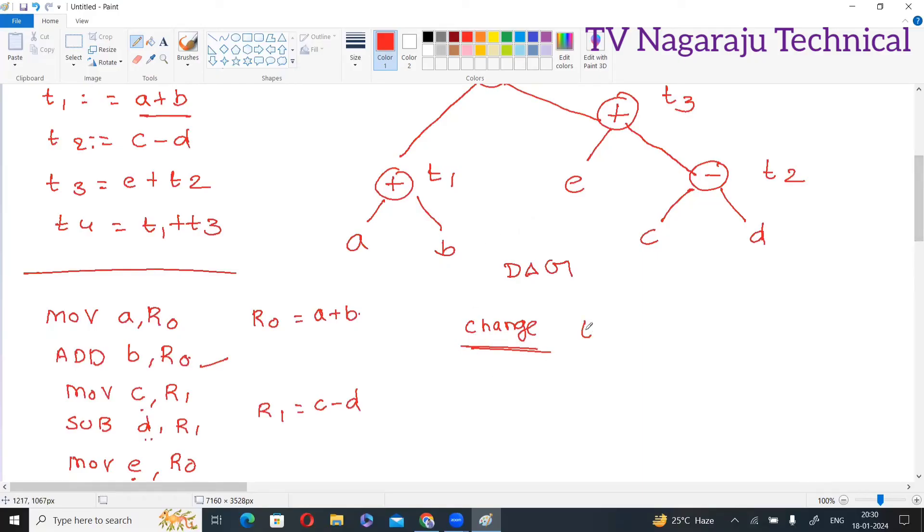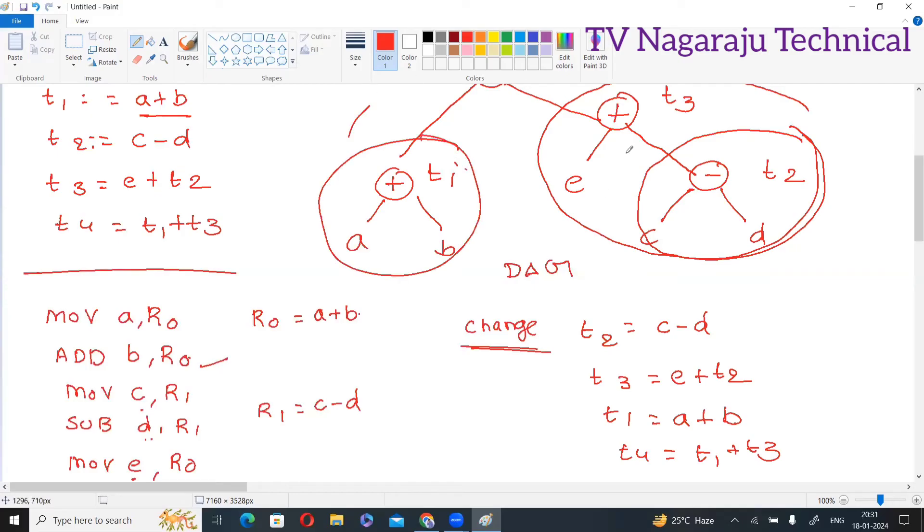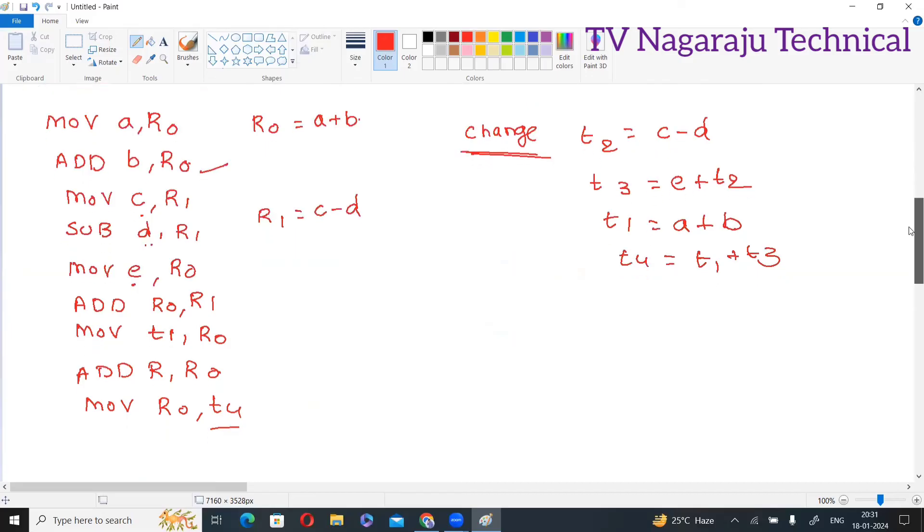Suppose first if I perform t2 equals c minus d, t3 equals e plus t2, t1 equals a plus b, t4 equals t1 plus t3. From this, first I am performing this operation, then this operation, and then overall addition. If I change the order, what code am I getting?